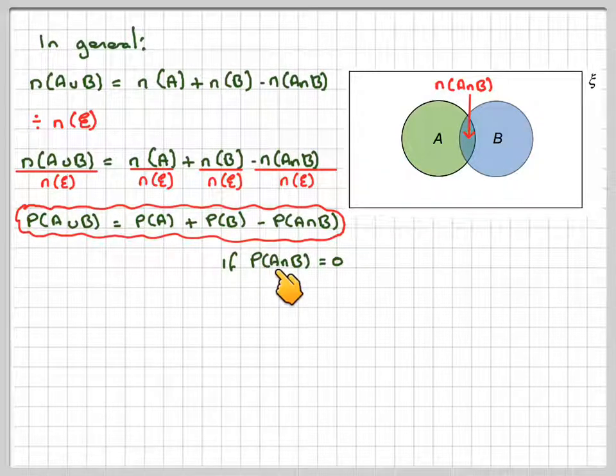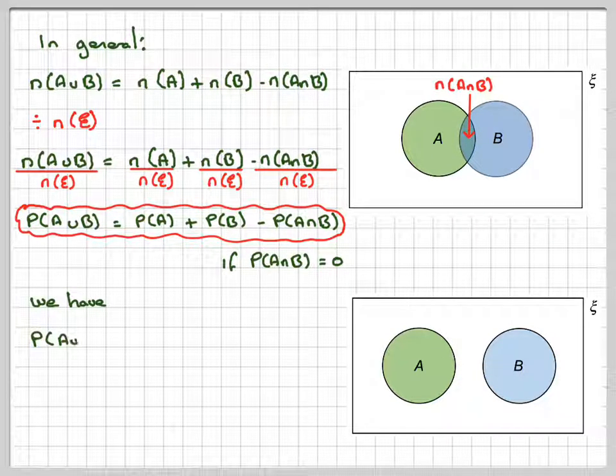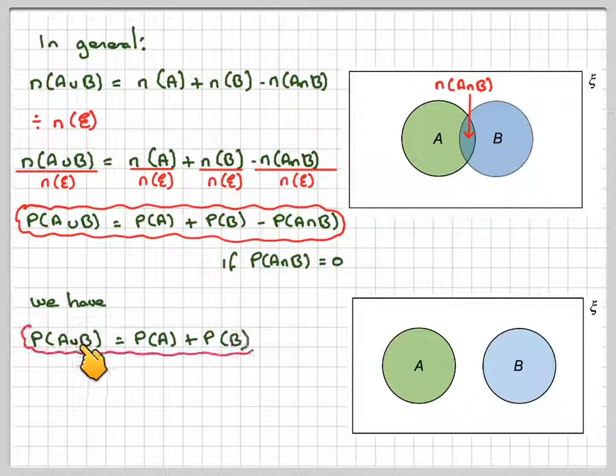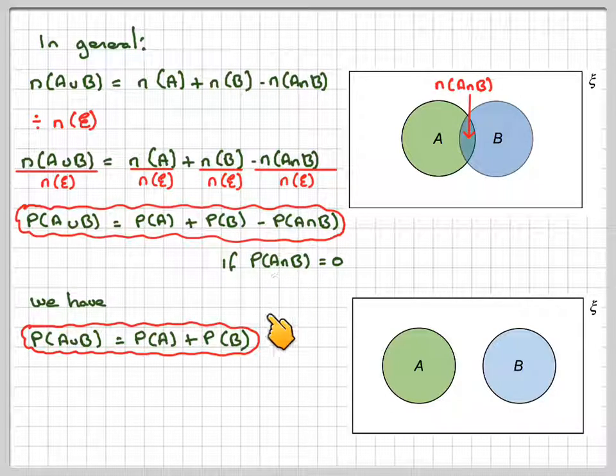Now, if the probability of A intersection B is equal to 0, then we go back to the previous video where there is no intersection. We then have the probability of A union B, just the probability of A plus the probability of B. We are subtracting that, but it's actually equal to 0, so we don't bother writing it in.